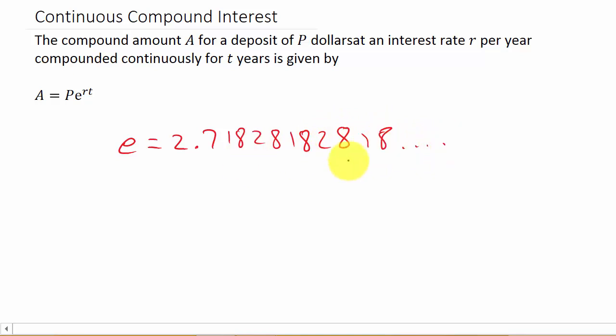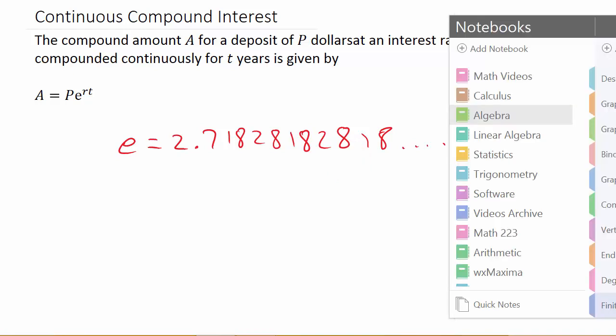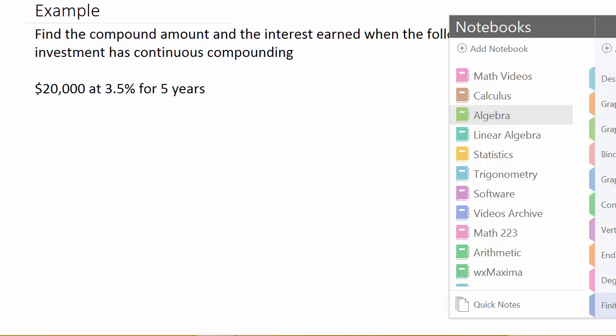And there's a button on your calculator, an E button. If you find your LN button, your natural log button, it should be right above that button there. So, let's go ahead and look at an example.